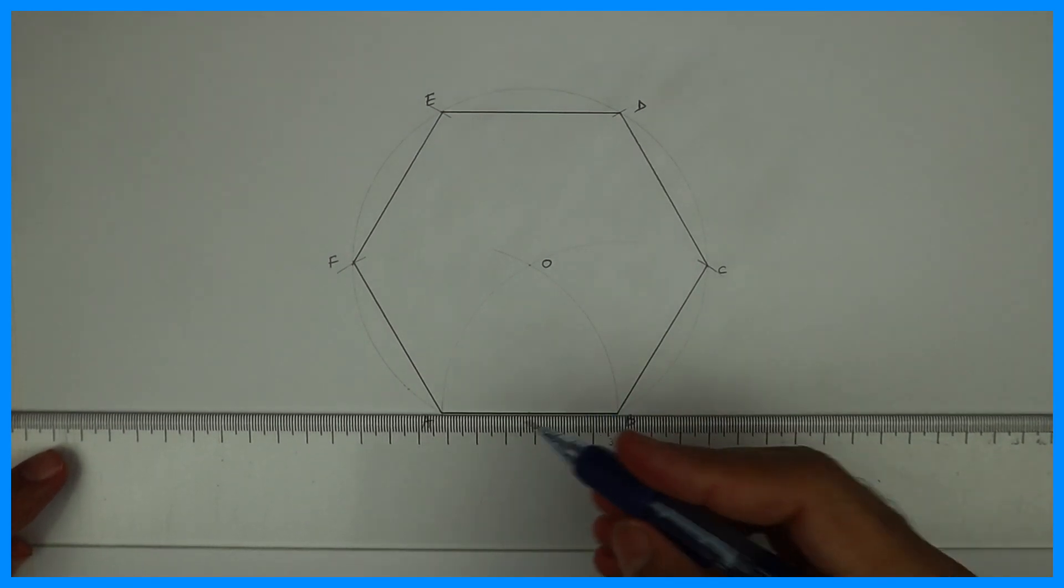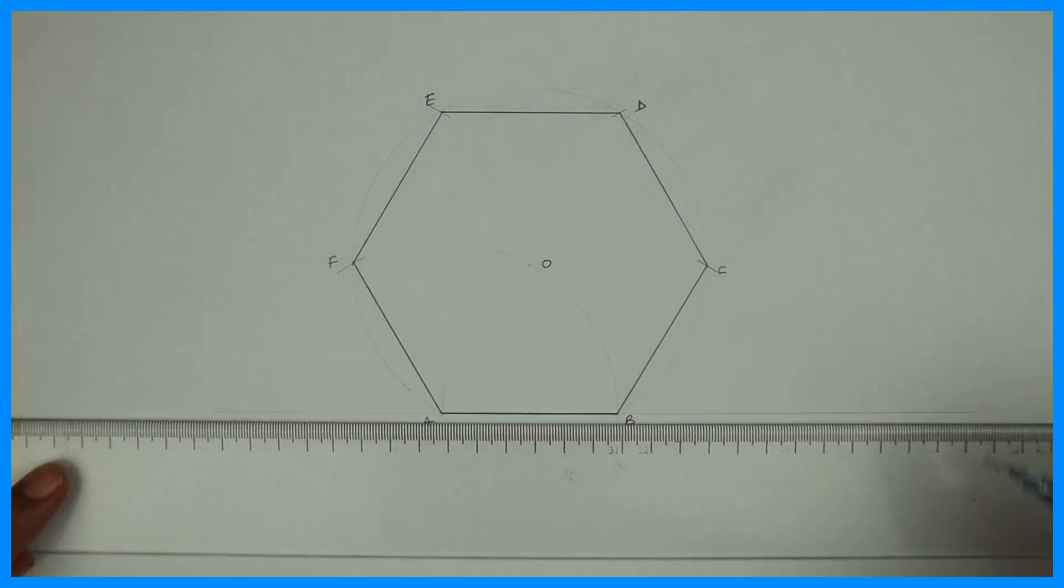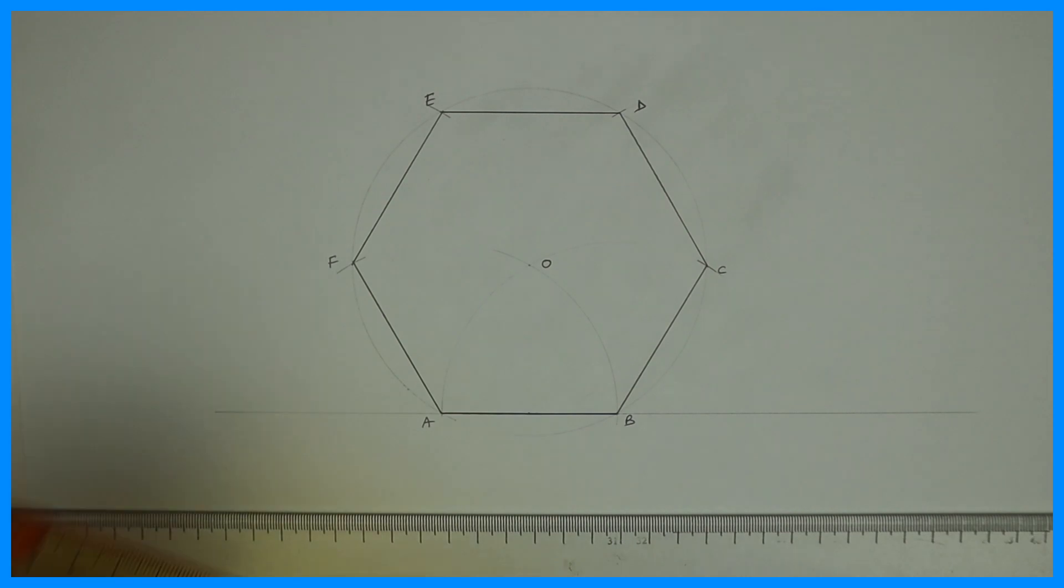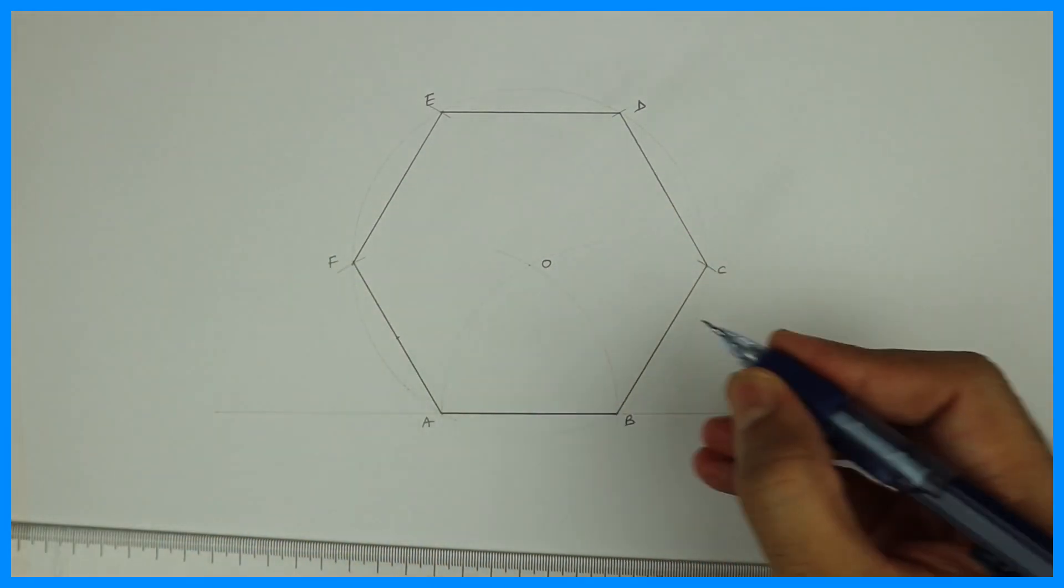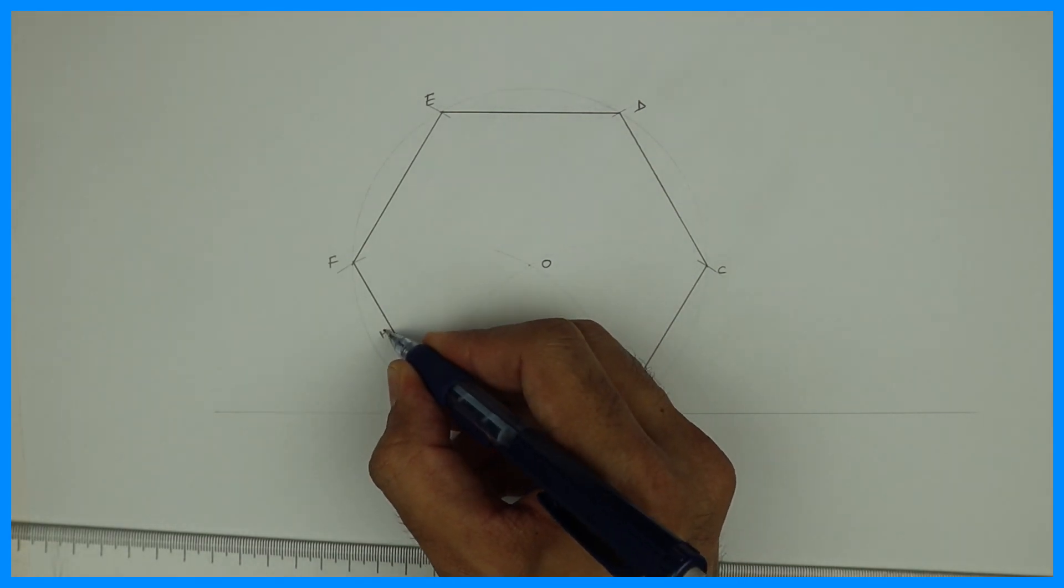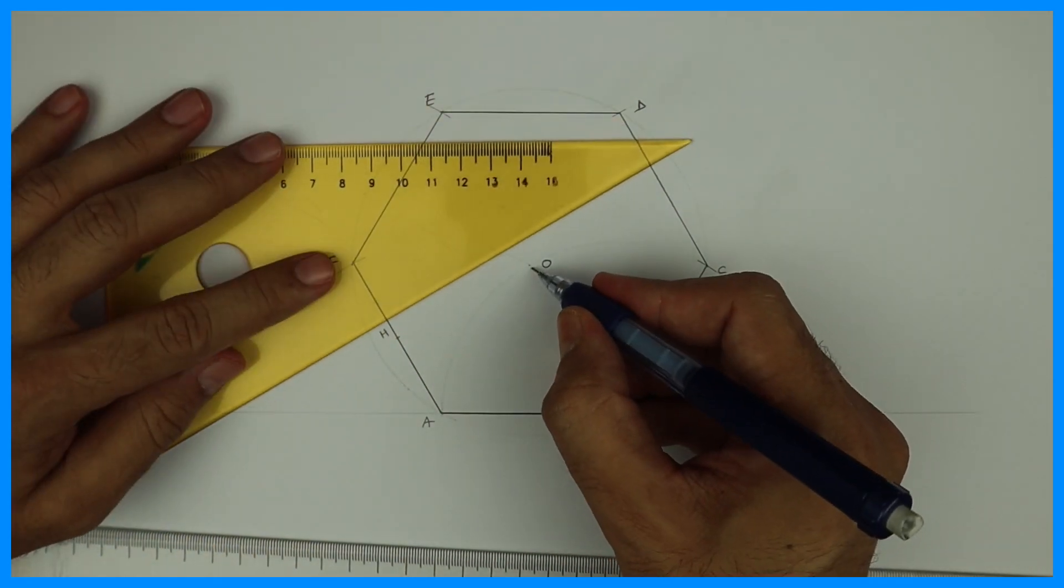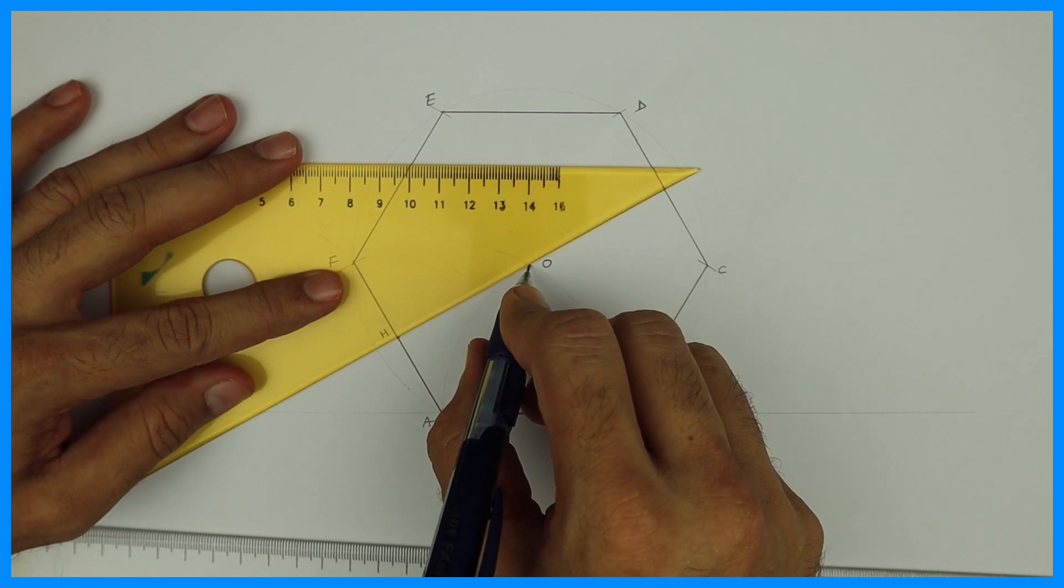Then extend line AB like this, draw a horizontal line, and take the midpoint of AF, which is 30mm. Let's say that point is H. Then draw line OH and extend.